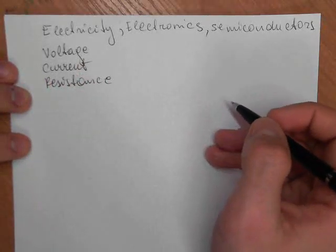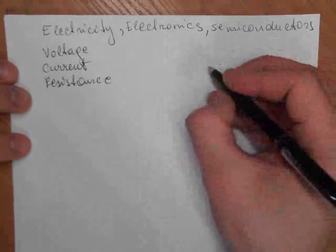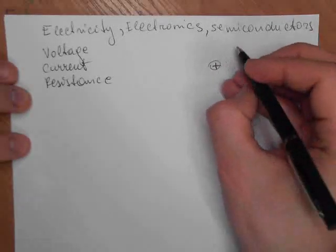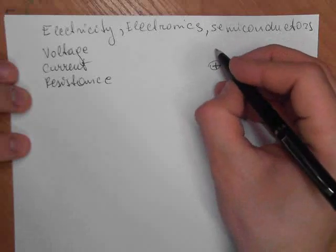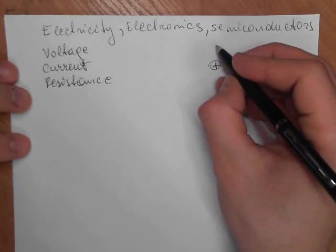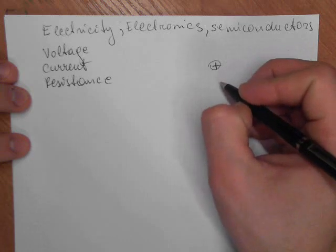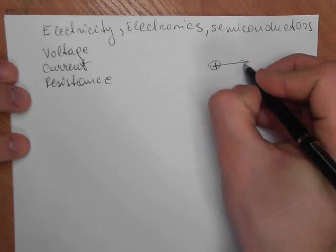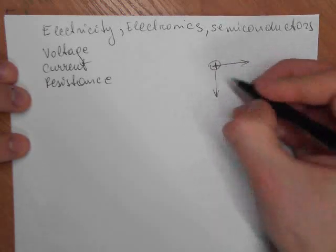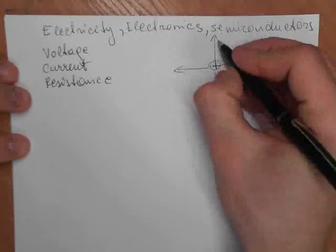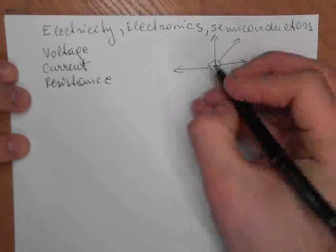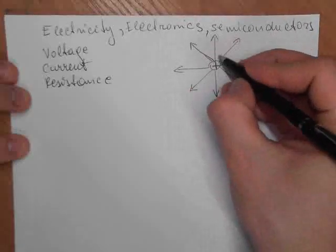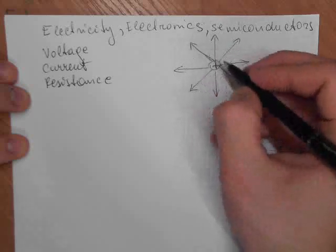As we know, every electric charge — we have a plus here — it creates an electric field. This electric field propagates in all directions from the charge, so we can draw field lines like this. It also propagates here — basically everywhere. This is just a schematic representation; we can draw lines in between here.